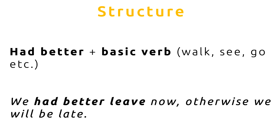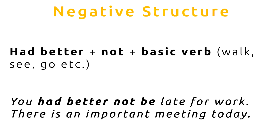Now, look at the negative structure for HAD BETTER. The negative structure is HAD BETTER plus NOT plus a basic verb. So, the example says, You had better not be late for work. There is an important meeting today. So, you can see the structure. It's highlighted in bold. HAD BETTER plus NOT plus BE, which is the basic verb.